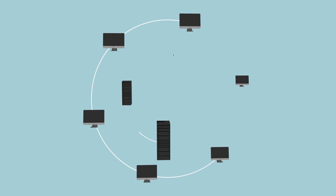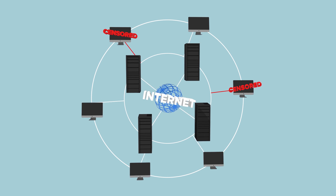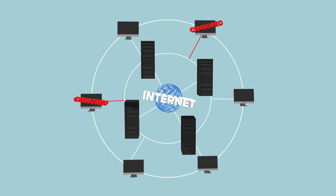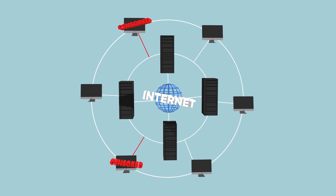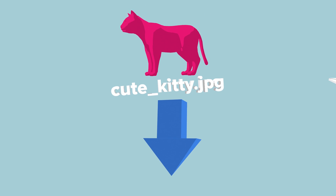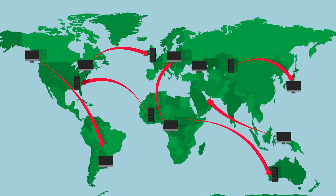The ability to selectively censor content is made possible by the structure of the Internet. All of our online activities, including the websites we browse, the emails we send to family and friends, and the files we download, send data to and from our computers and servers located all over the world.